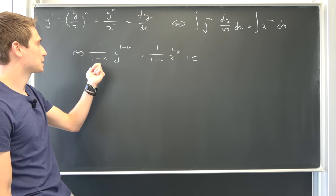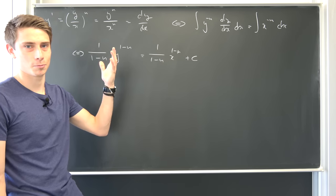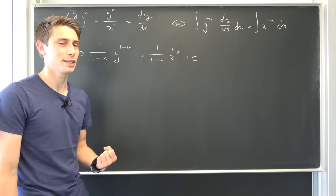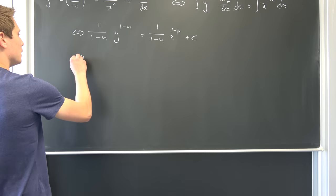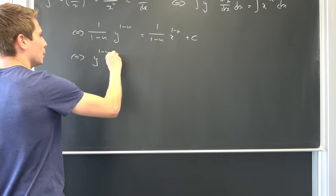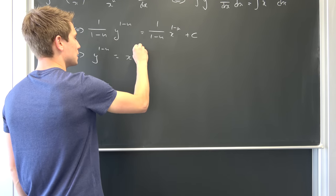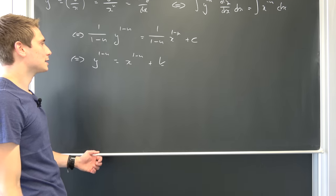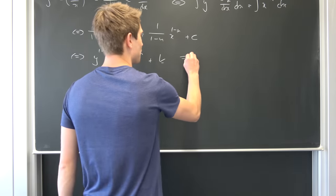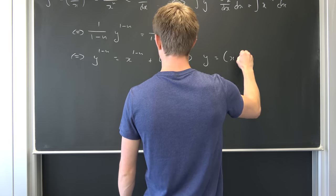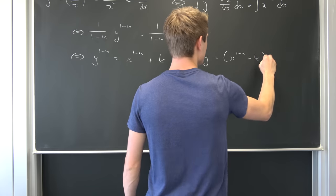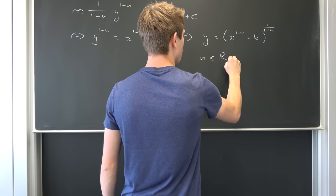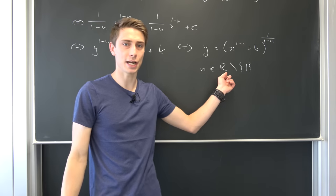What we can do now is multiply both sides by (1 minus n) — we don't want it to be 0. So maybe you can already see the contradiction: if n is equal to 1, we would land at a contradiction. So that's the next case we are going to consider. Now y to the (1 minus n) power equals x to the (1 minus n) power plus a constant k, and we take the 1 over (1 minus n) power on both sides, ending up with y equal to (x to the (1 minus n) power plus k) to the 1 over (1 minus n) power. This holds for n being an element of the real numbers but without 1.